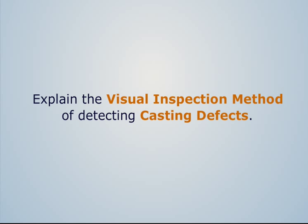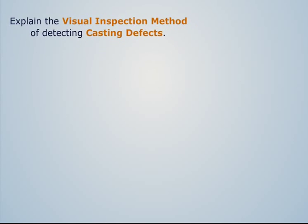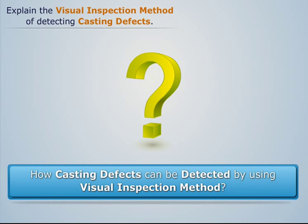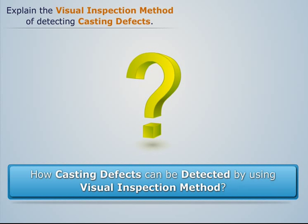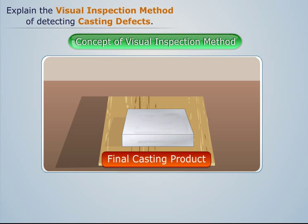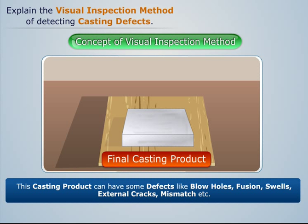To understand how casting defects can be detected using the visual inspection method, let's consider a casting product. We know that the casting product obtained from casting has some defects such as blow holes, fusion, swells, external cracks, mismatch, etc.